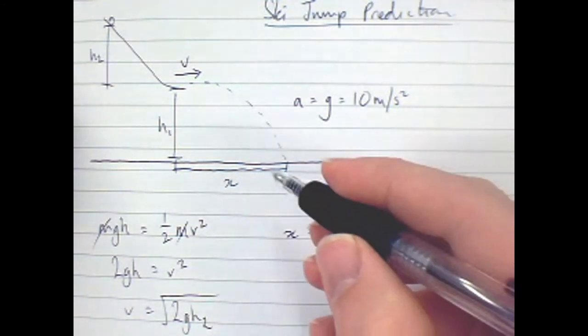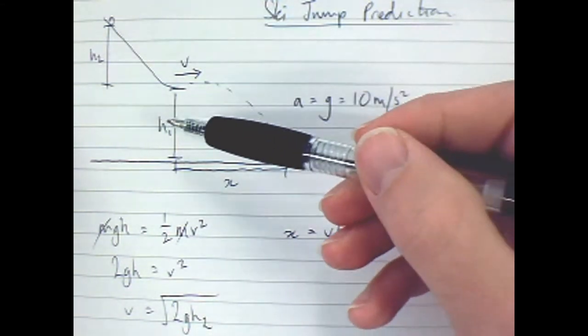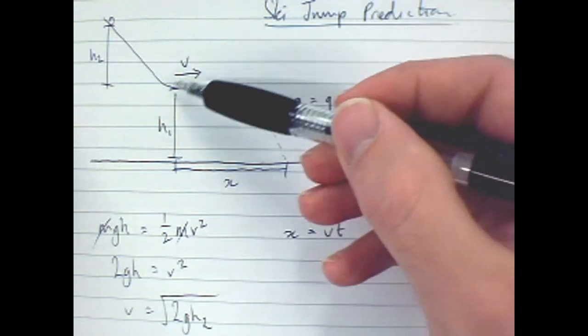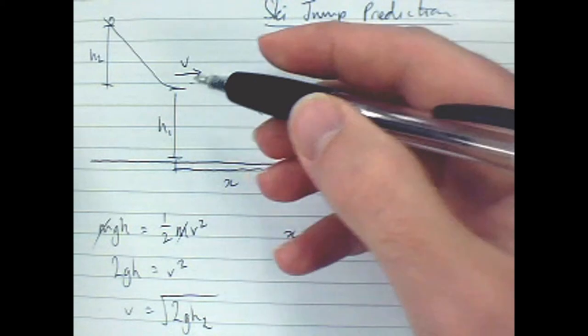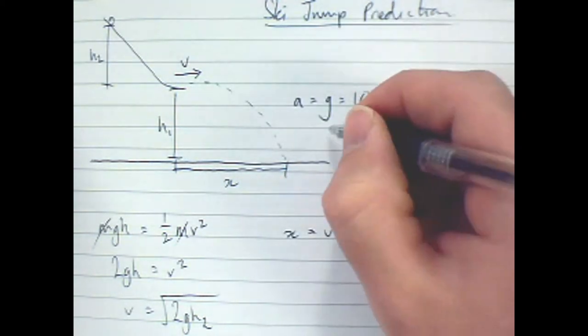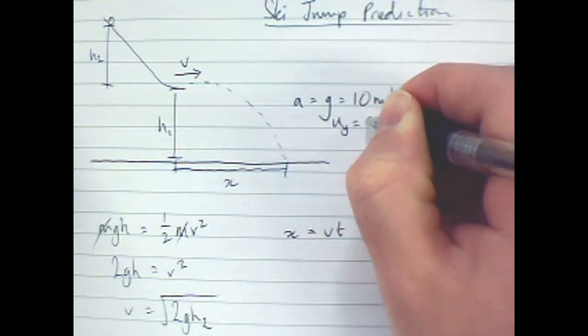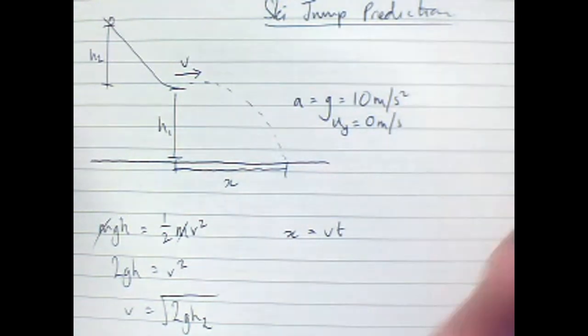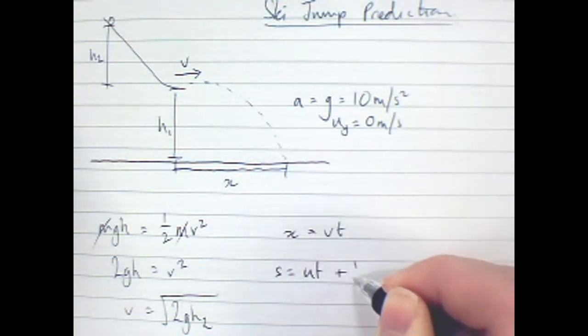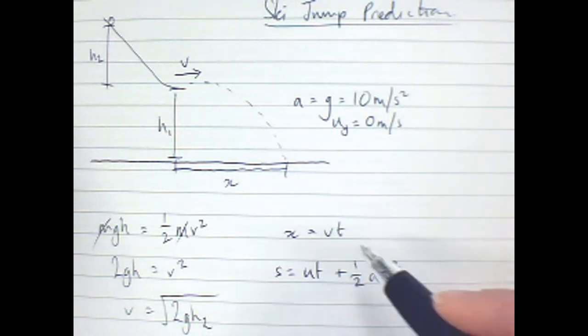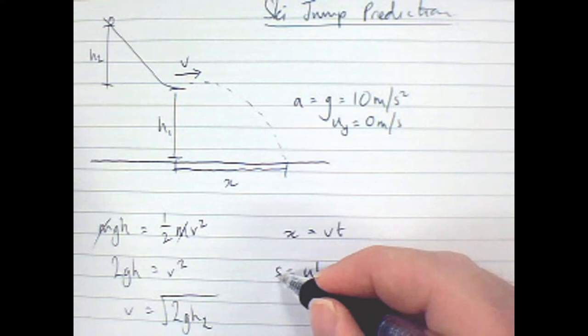So in this case, I know acceleration, I know displacement, and I do know an initial velocity in the vertical dimension, which is 0. So I'll do that. UY is 0. So I can use S is UT plus a half AT squared to work out the time, because this is 0, and this is H1.